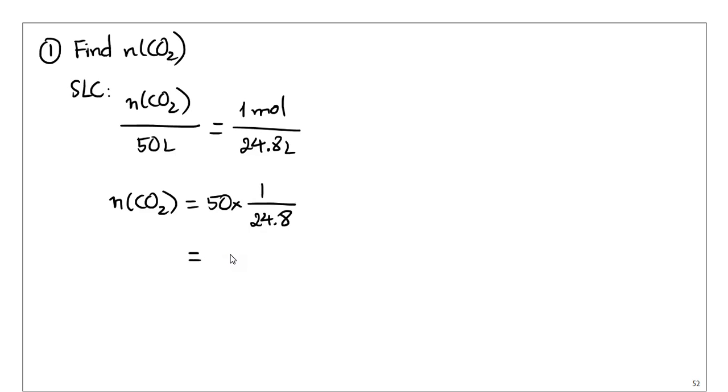So the number of moles of CO2 is going to be 50 times 1 over 24.8. And I mean, obviously, if you think about it logically, it's just 50 divided by 24.8. 50 divided by 24.8, which is 2.016 mole or something like that.